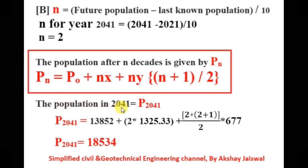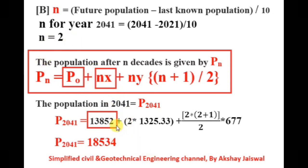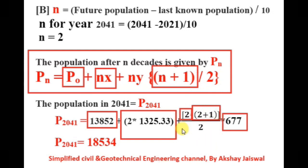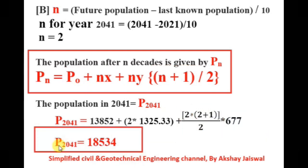The population in 2041 is given by: P0 = 13,852 (latest known population from the table), n×x = 2 × 1325.33 (calculated from the table), n×y = 2 × 677 (calculated from the table), and n+1 = 2+1 = 3, divided by 2. After all calculations, the population in 2041 is 18,534.